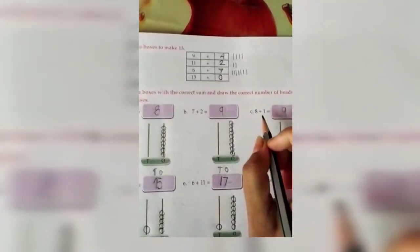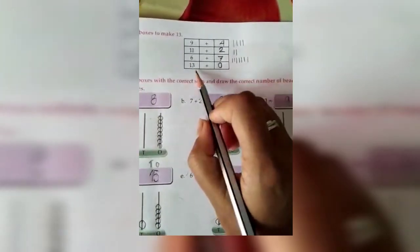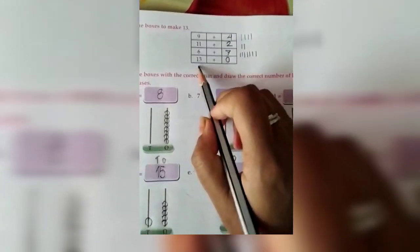Because as all of you know that by adding 0 with any number, we get the same number only. So to get 13, we have to add 0 with 13.